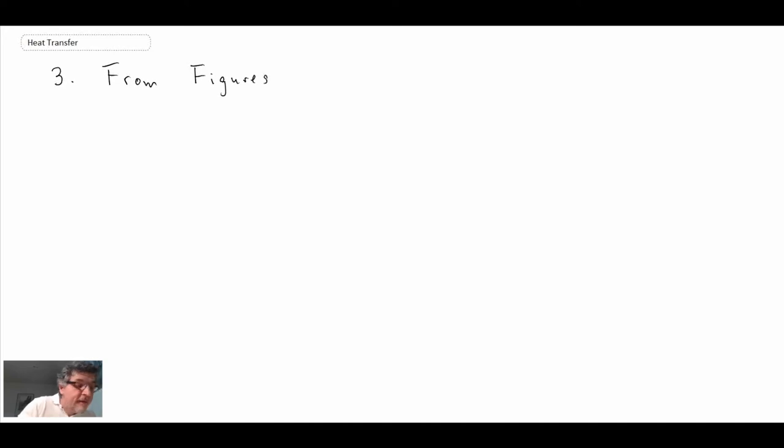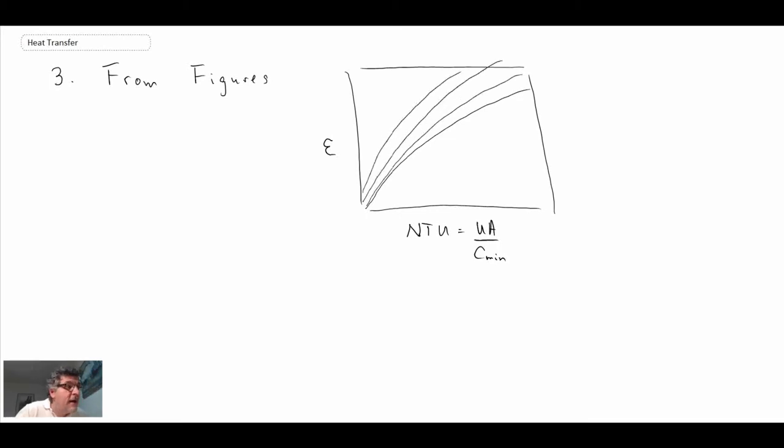We can get the effectiveness off of a figure. Typically I'm not going to pull out a figure; I'm just going to sketch it. What we have is effectiveness on the vertical and then on the horizontal we have the number of transfer units, NTU equals UA divided by C-min. Then what we have are different curves for different values of C_R. So that would be for C_R equals 0, and then asymptotically we would get C_R equals 1 at this point here.